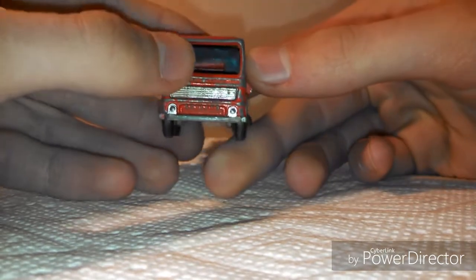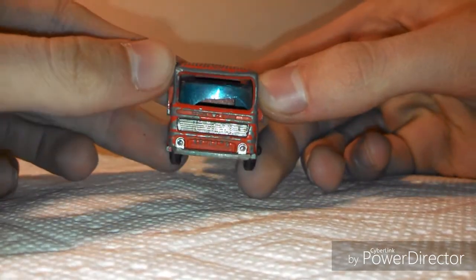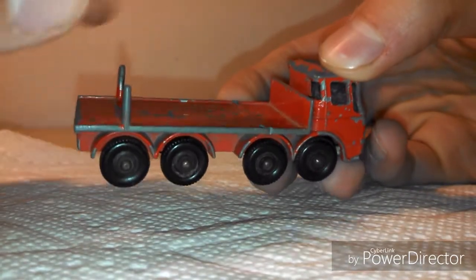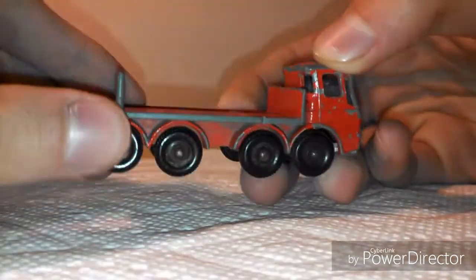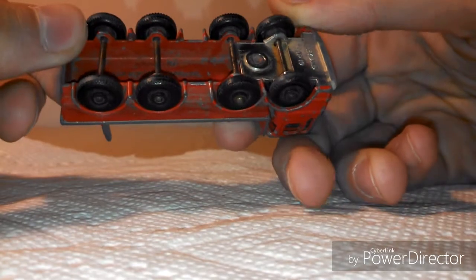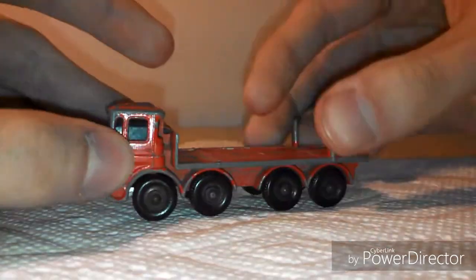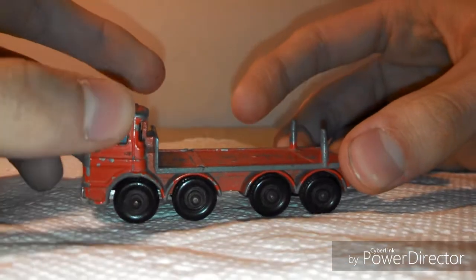The windshield is cracked so we'll have to make a new windshield for it. Two of these little posts that used to be there are missing now. The wheels are rusted and it's overall just kind of beat up, but it's a really cool truck. I like this one.